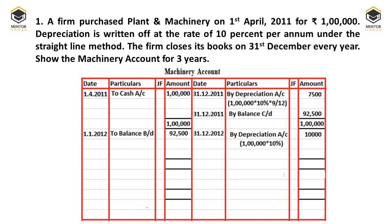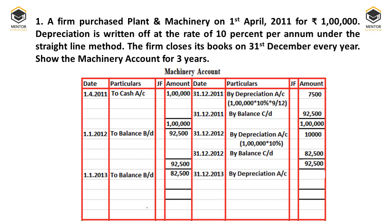In the first year we calculated nine months' depreciation; in the second and third years we calculate full-year depreciation on the original cost. Closing the account for 2012, the debit side totals Rs. 92,500 and the balancing figure on the credit side is Rs. 82,500 — written as 'By Balance c/d'. This is brought down on 1st January 2013. The same depreciation of Rs. 10,000 is charged again, leaving a closing balance of Rs. 72,500.